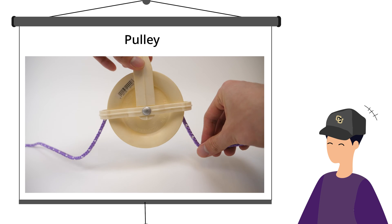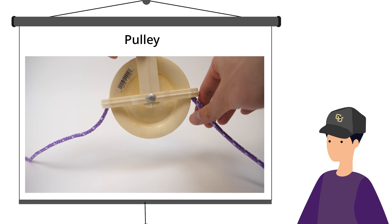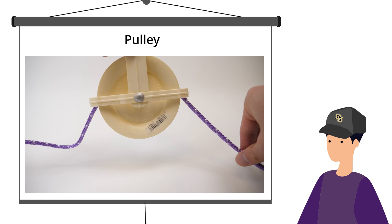Pulley. A pulley is a wheel with a groove for a rope. When something is attached to a rope, it can be moved by pulling on the other end that has a loop around the pulley.